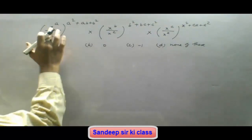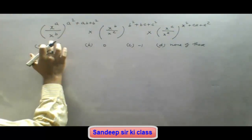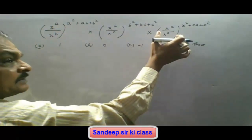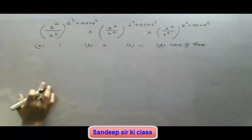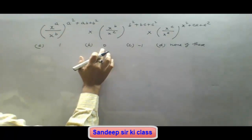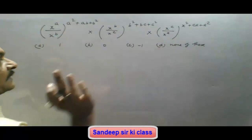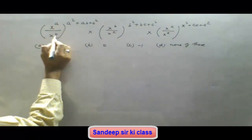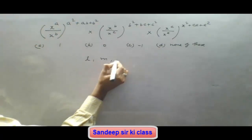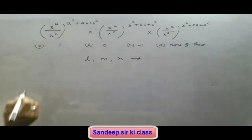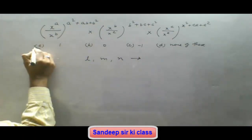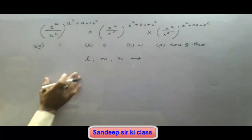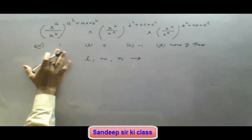The next question is: (x^a / x^b) raised to the power (a²+ab+b²), and the next two terms in cyclic order. We have seen a similar question earlier where l, m, and n were used, and the answer came as 1. On the same lines, this question can be solved. Our answer here is 1.